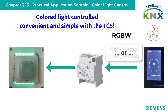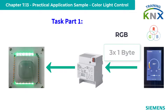With RGBW, the color temperature can also be varied instead of the individual color values. I would like to round off our TC5 practical project by first creating a simple three-color control via the DALI gateway.